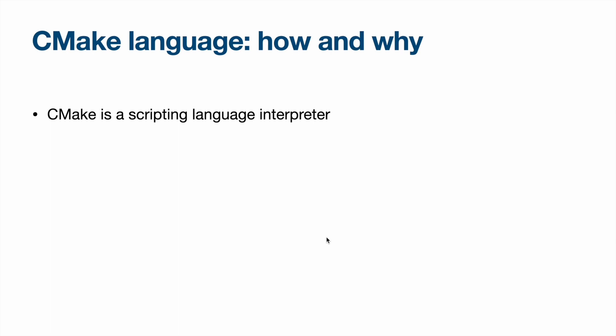You can actually just run a CMake script on its own without generating a build system, which is a common use case if you're creating a custom target that just needs to do some work but not actually build anything. It's very common to have that target execute a CMake script because you already know that CMake is on the computer you're running on. That's something I'll discuss in more detail in a later video.